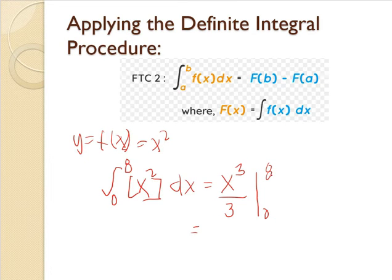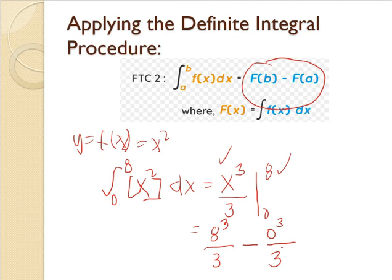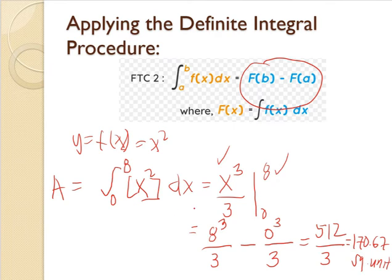Where 0 is the lower limit and 8 is the upper limit. So this is how it is done. We substitute the upper limit, 8 to x. So 8 raised to 3 divided by 3. This is for the upper limit. For the lower limit, we have minus. To get the difference, 0 substitute to x becomes 0 raised to 3 divided by 3. 8 raised to 3 is 512 divided by 3. And 0 raised to 3 is 0. 0 divided by 3 is 0. So our answer is 512 divided by 3 in 2 decimal places is 170.67 square units. So the area using the definite integral procedure is 170.67 square units.